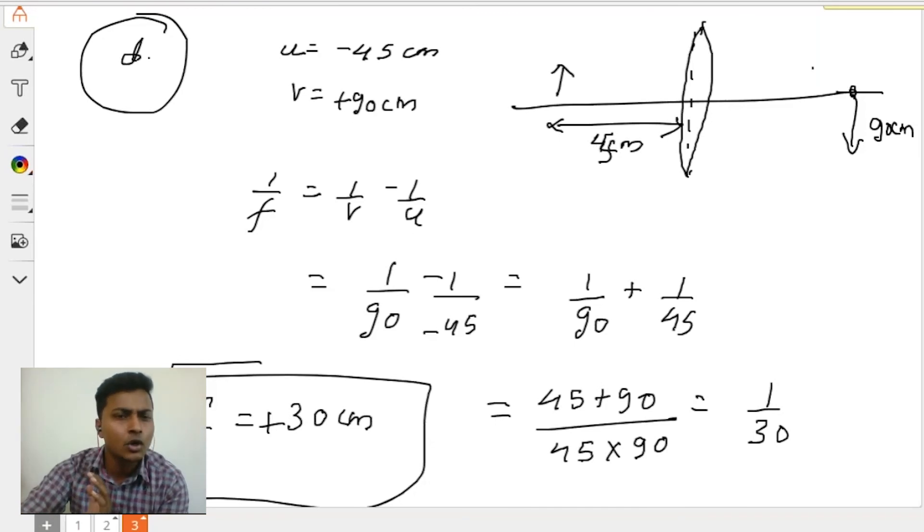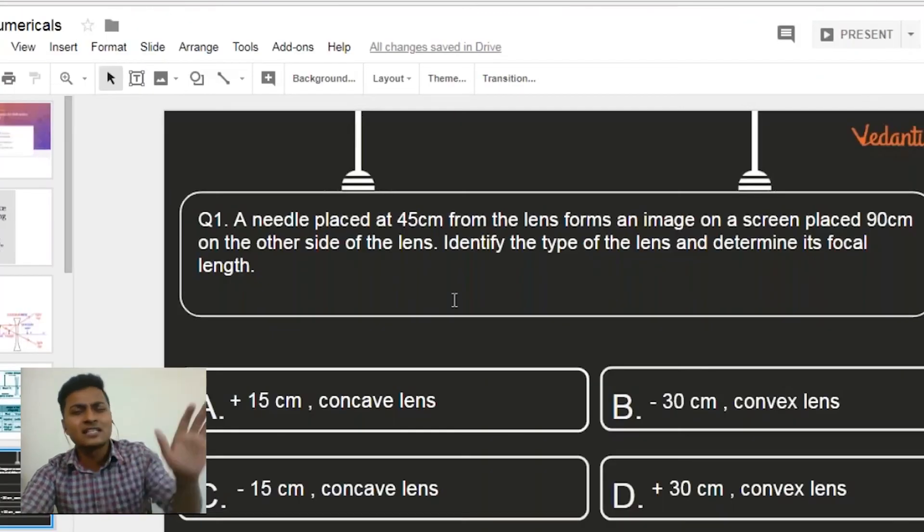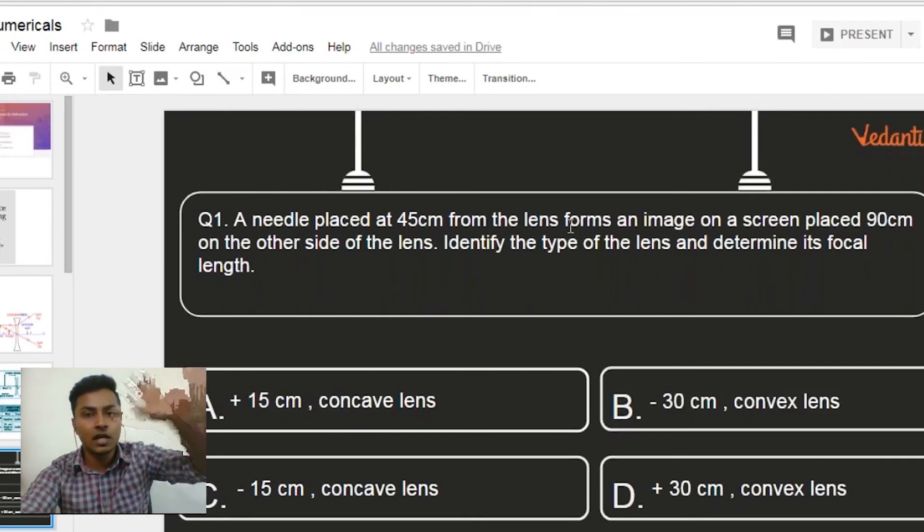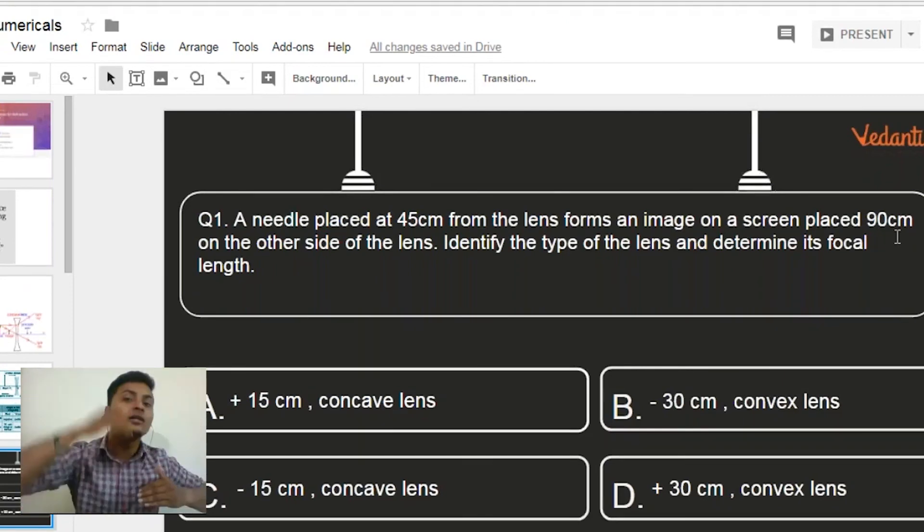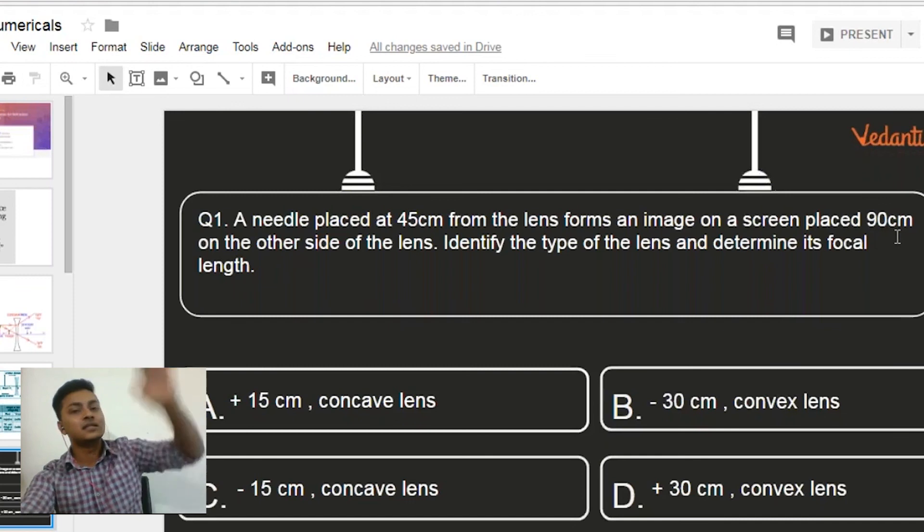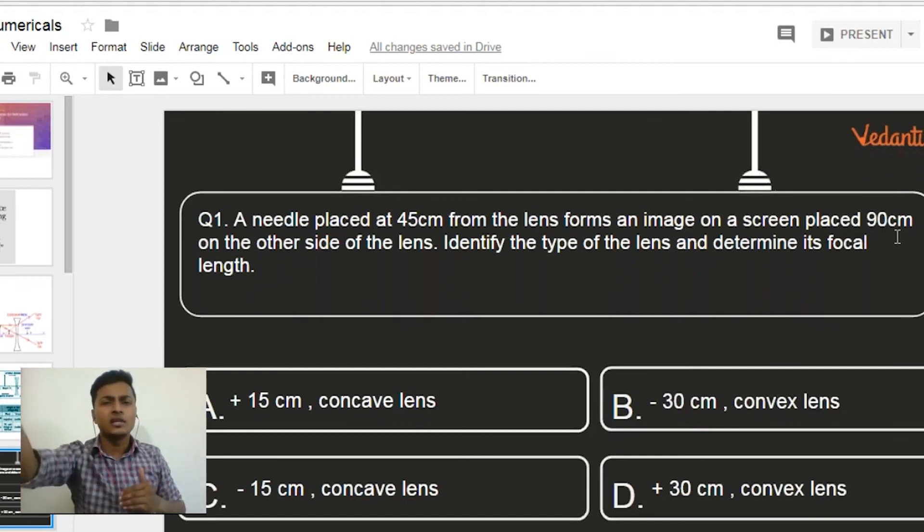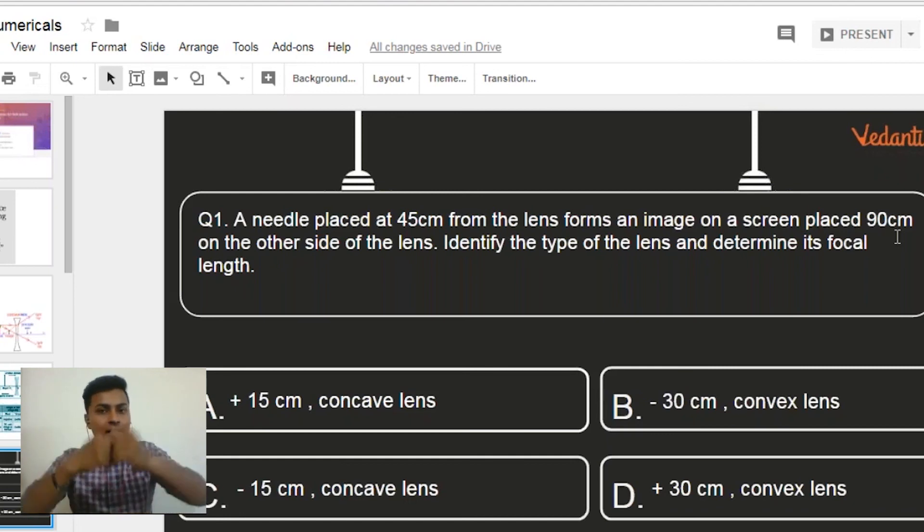All of you need to understand, so look over it very clearly. Everything is given in the question. A needle placed at 45 centimeter from the lens, object distance 45 centimeter negative value. An image on a screen placed 90 centimeter on the other side of the lens, 90 centimeter image distance on the other side, so positive value. Chill, done with that. Itself you understood concave lens, it cannot be in the picture because concave lens never forms an image on the right hand side.